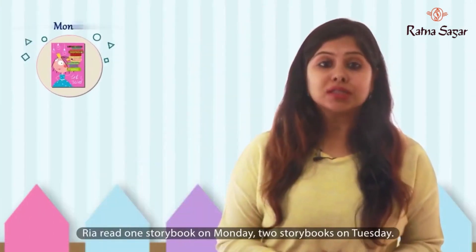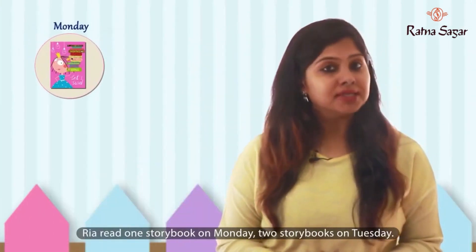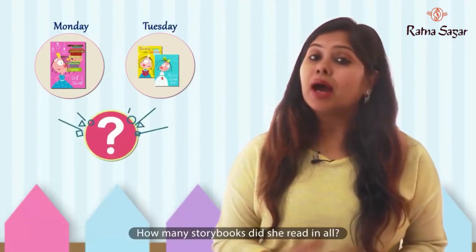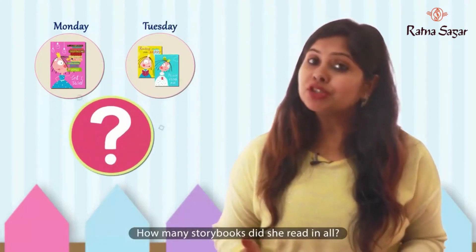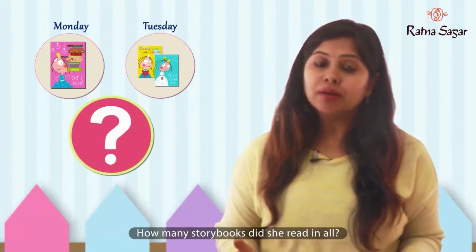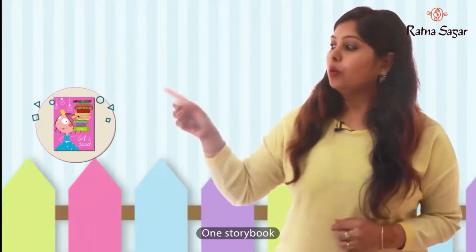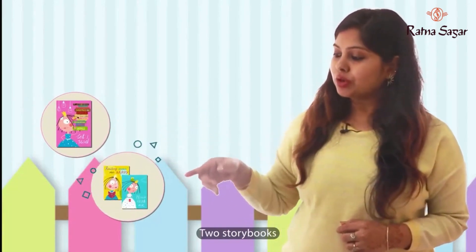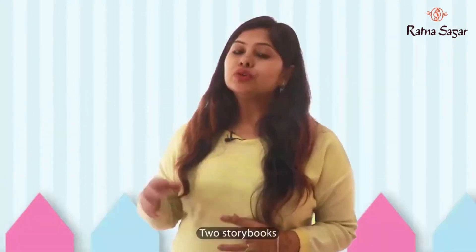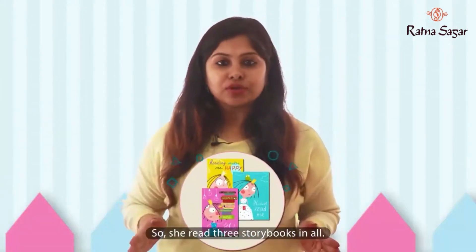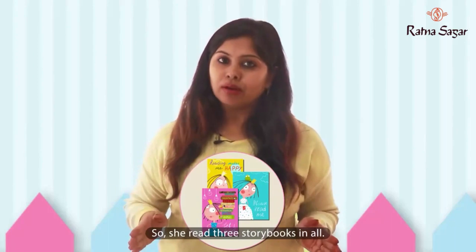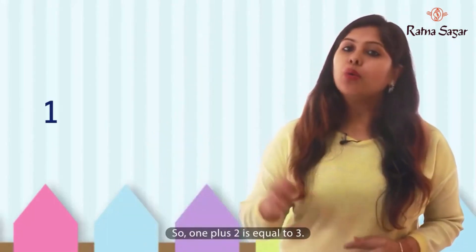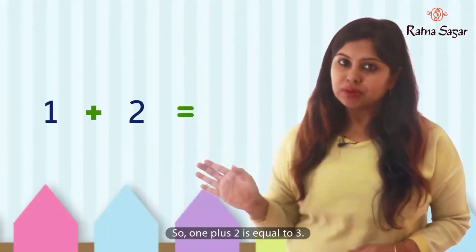Rhea read one storybook on Monday, two storybooks on Tuesday. How many storybooks did she read in all? One storybook, two storybooks. So she read three storybooks in all. So one plus two is equal to three.